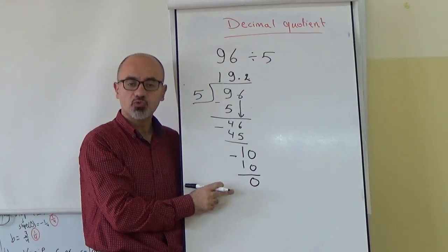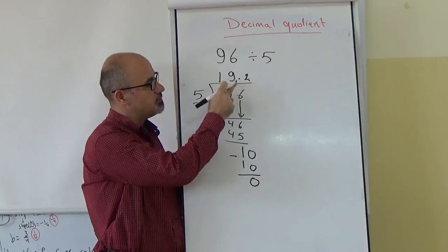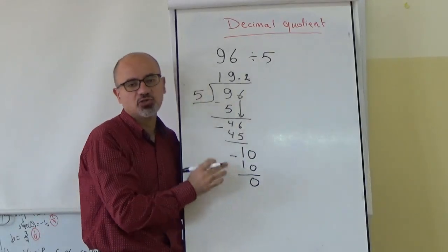Now, we can say to the teacher, we are finished. It is 19.2 and the remainder should be 0.